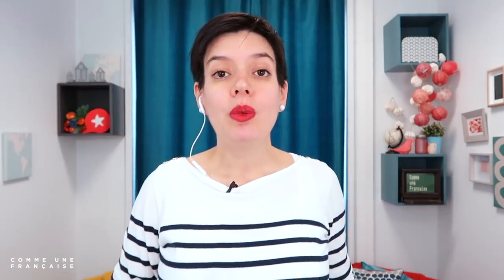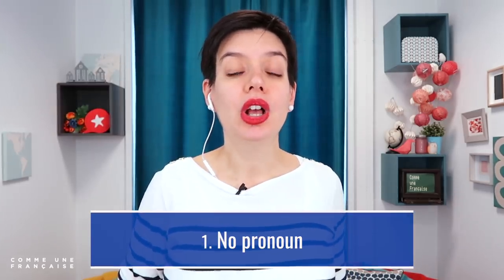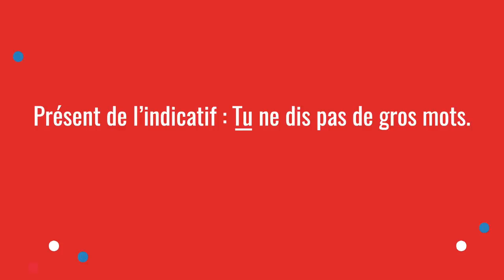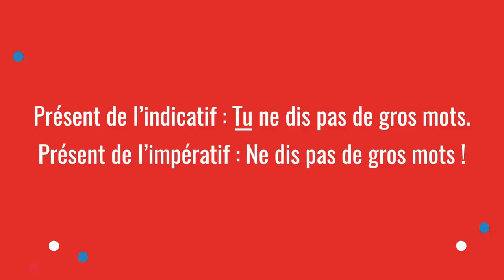Now, how do we build l'impératif? There are three things to know. First, there is no pronoun. For example, in le présent de l'indicatif you say tu ne dis pas de gros mots, but in l'impératif — when it's an order — you say ne dis pas de gros mots. L'indicatif has the tu, but l'impératif doesn't.